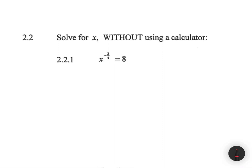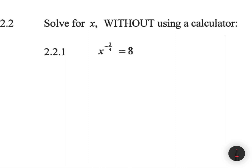Solve for x without using a calculator. We have x to the power minus 3 divided by 4 equals 8. Instead of writing 8 we're going to write it as 2 to the power 3. Then I'm going to use a little trick — let me show you.